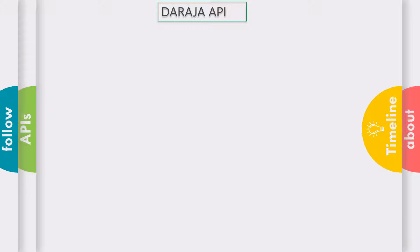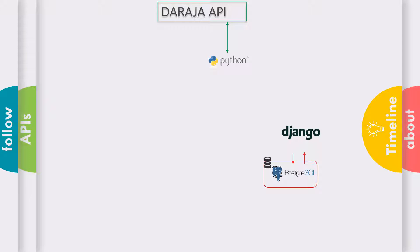After that, we are going to see how we can tie up the Daraja API using Python as the primary programming language to handle business transactions — whether it's checking balance, sending money to a pay bill, receiving money, or sending money between pay bills. We'll also use Django as the web framework, starting with a PostgreSQL database where we'll save all transaction information such as reference numbers, who made what transaction, and at what time.